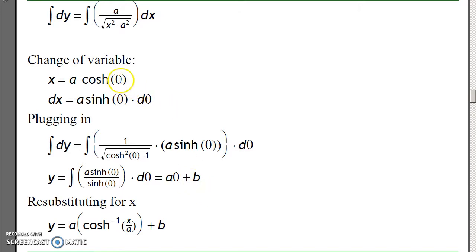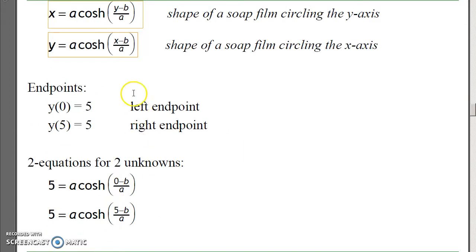Now back substitute, theta is a function of x. And solve backwards, x is a function of y. This is the shape of a soap film that circles the y-axis. If you prefer soap films that circle the x-axis, which is kind of my preference, just swap x and y. Do a change in variable. So this is the shape of a soap film that circles the x-axis.